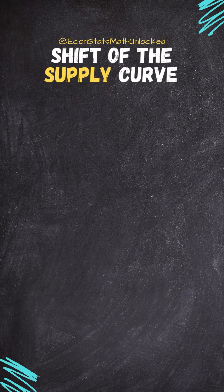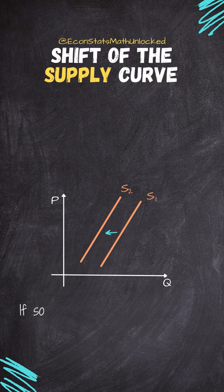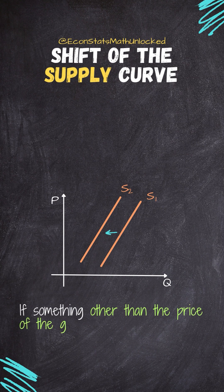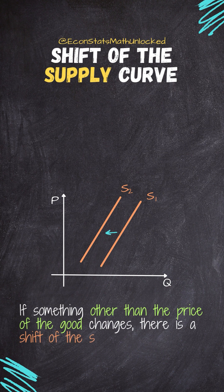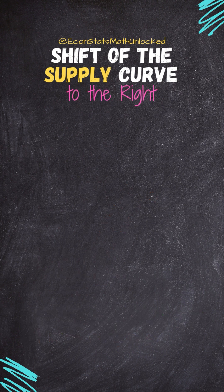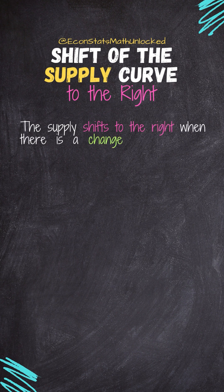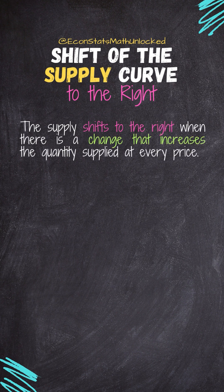What shifts the supply curve? If something changes other than the price of the good or service, the supply curve shifts. Now what shifts the supply curve to the right? The supply shifts to the right when there is a change that increases the quantity supplied at every price.